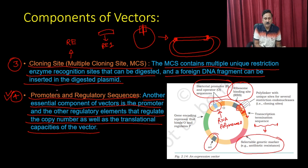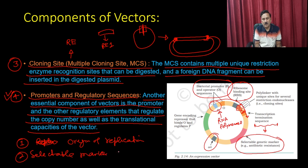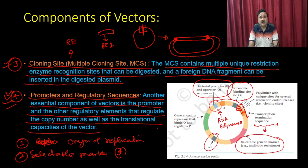To summarize, you require four components: origin of replication, selectable marker, cloning sites, and promoter with regulatory sequences. If I want to design a vector, I have to keep all these components under consideration.